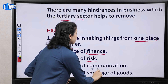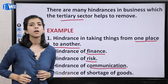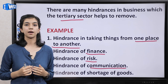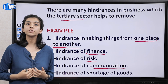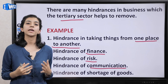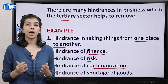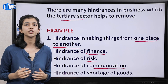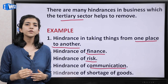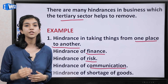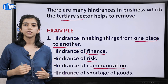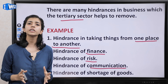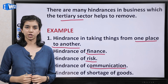The fourth one is hindrance of communication. Main ek producer hun, mainne kuch produce kiya. But aapko mainne jo produce kiya uske baare mein pata kaise chalega? Main toh yahan produce karke baith gayi, but aap yaani customer mere paas aayenge kaise? Yahan pe communication barrier aa gaya. Toh yeh communication barrier hatane ke liye advertisement hume help kerti hai — hum advertisements ke through apne product ke baare mein poori information apne customers tak pahunchate hain.